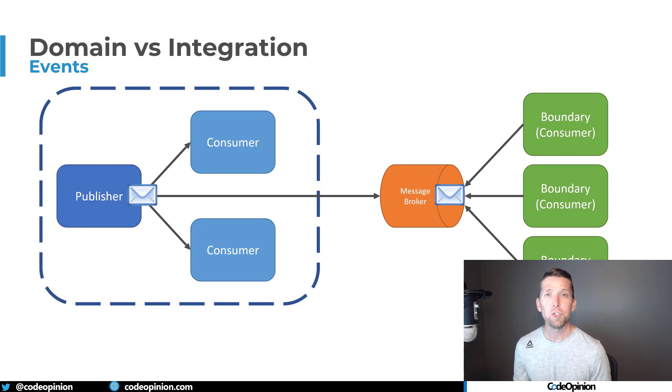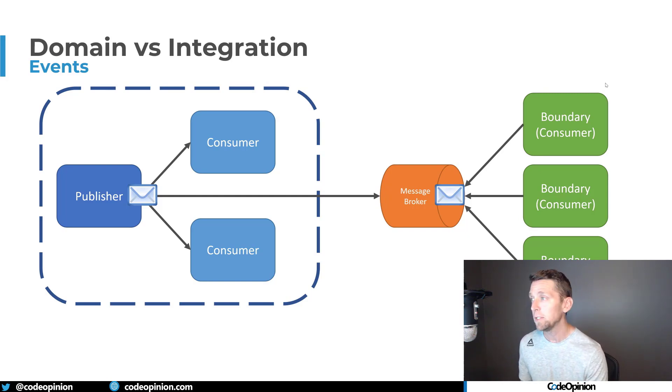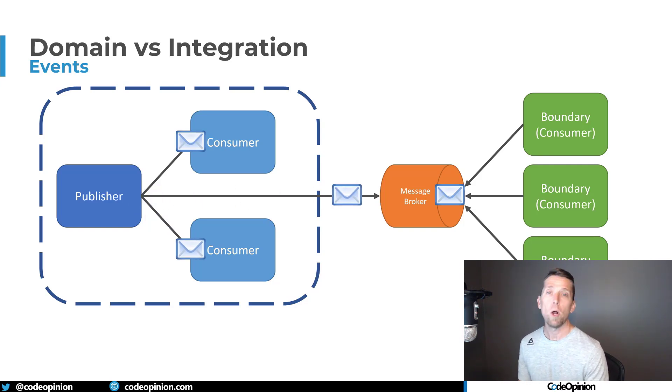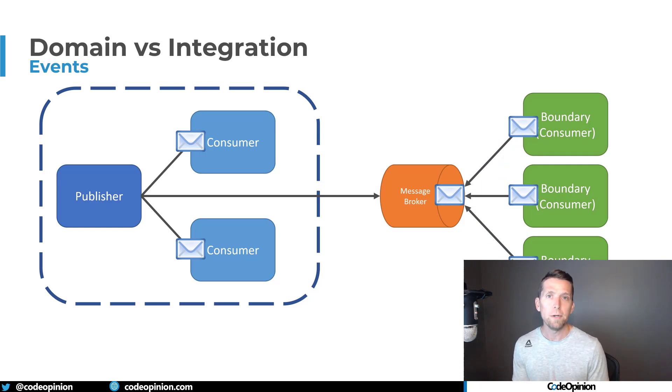So the question is: why do we have to have two different types of events? Why have domain events and separately integration events? Can't we just publish domain events as integration events — calling internal consumers with the event but also publishing it to the message broker for outside services to consume? Most recommendations online say to have clear separation: domain events stay inside the boundary and are never exposed outside, and if you need to expose something outside you create an integration event. However, I don't think it's that cut and dry.